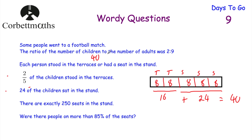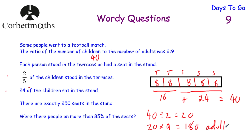Now we know there are 40 children. The ratio of children to adults is 2:9. So 40 ÷ 2 = 20 per part, and 20 × 9 = 180 adults. Altogether there are 40 children and 180 adults. That simplifies to ratio 2:9. We also know 16 children were in the terraces and 24 children sat in the stand.